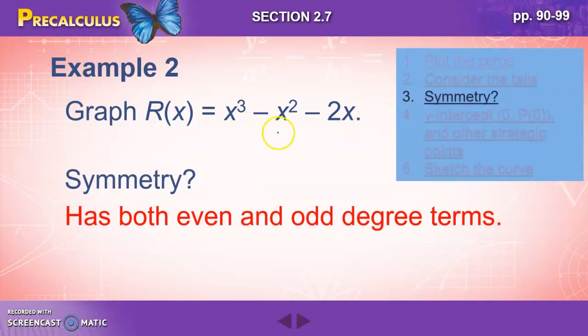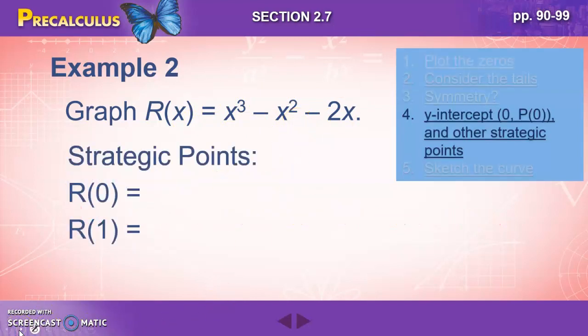Let's think about symmetry. If you look, it has with even and odd degree terms. So there is no symmetry. And as far as strategic points go, we already know our zeros. When we plug in zero to find our y-intercept, we get zero. So we've got a zero, zero point. And then we're just going to plug in a one to see what another point might be when x equals one, y equals negative two.